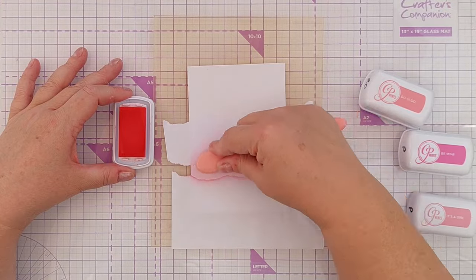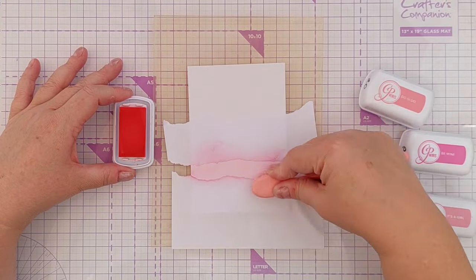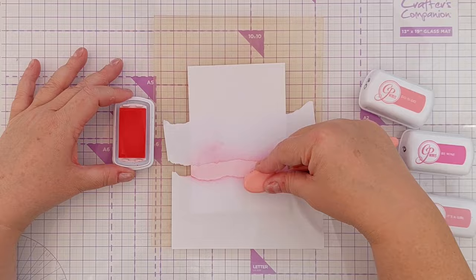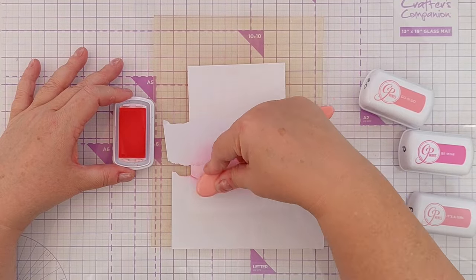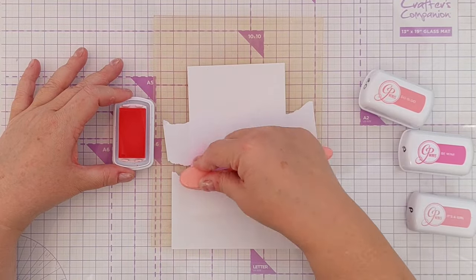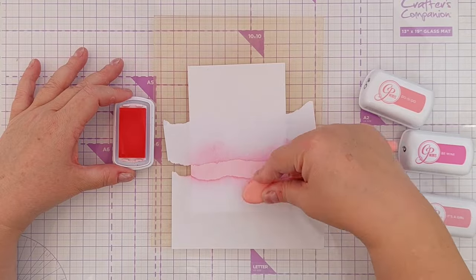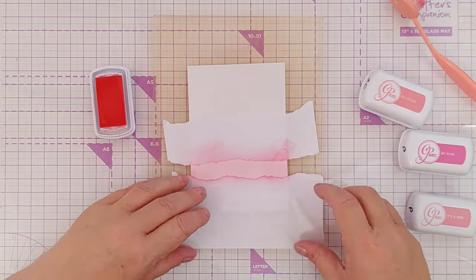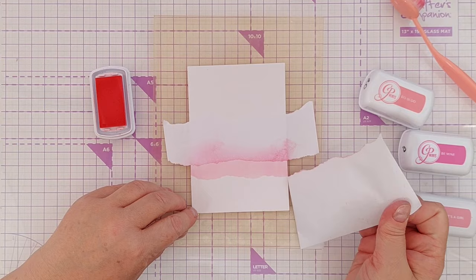I chose Katherine Pooler inks for this project because I wanted a translucent ink, something very light and almost glowy. I decided to use mixed media paper for my card panel because the Katherine Pooler inks blend beautifully on mixed media paper. You get a really smooth blend.